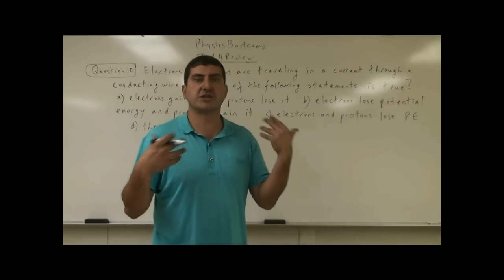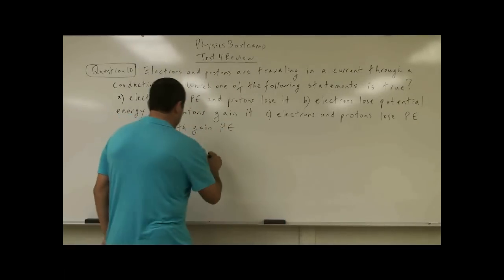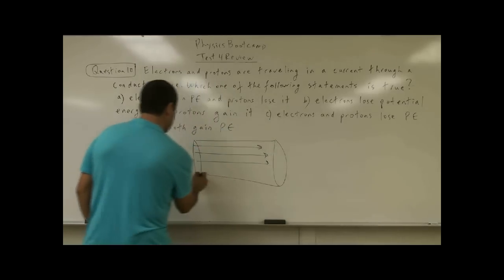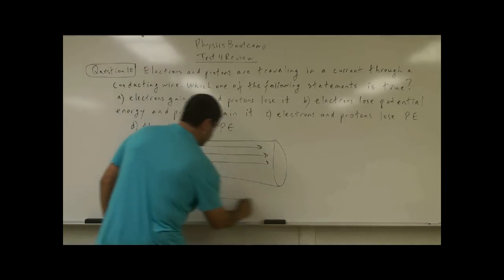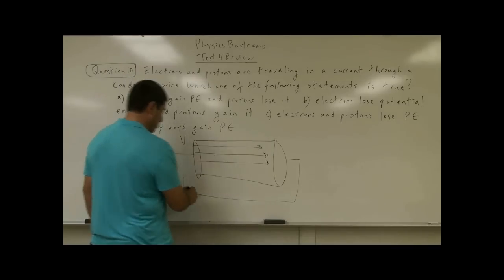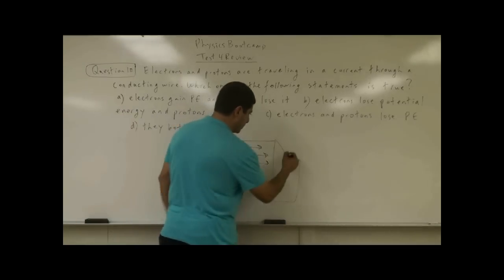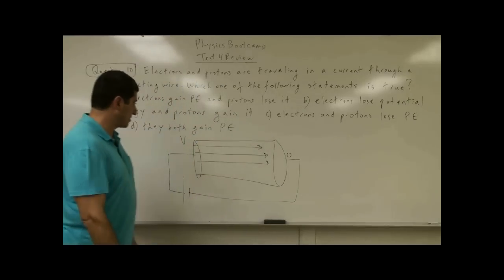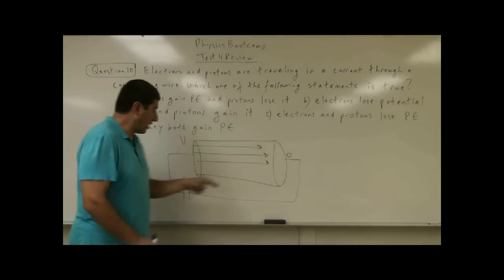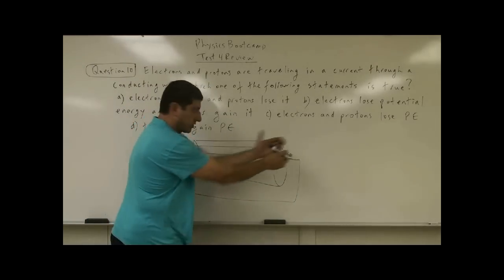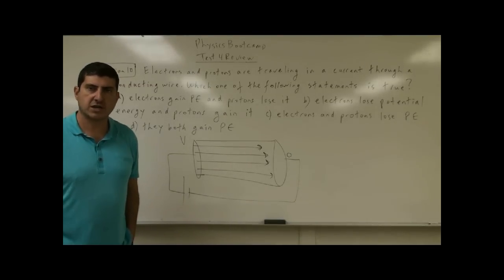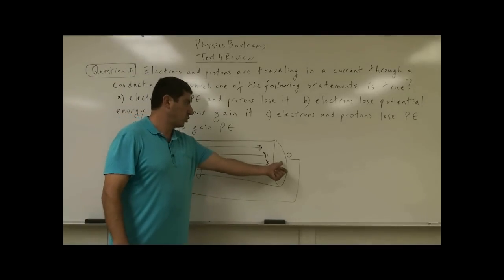The potential energy we're talking about here is not gravitational potential energy but electrical potential energy. So let's go through this. When there is an electric field — imagine there is a wire here, and maybe there's a battery that sets up a potential difference. The positive terminal of the battery is connected to the left side of the wire, so that is the higher potential side. The electric field in the wire goes from higher potential to lower potential.